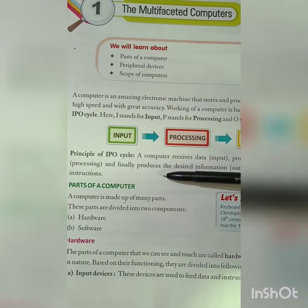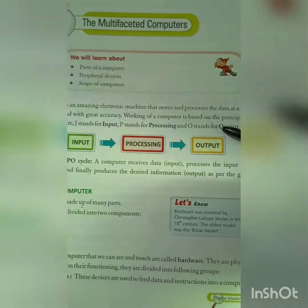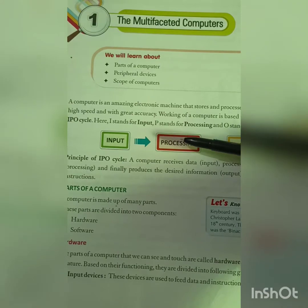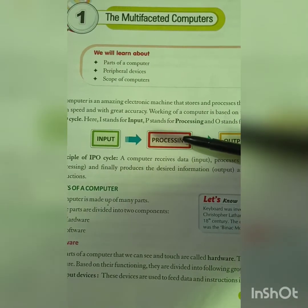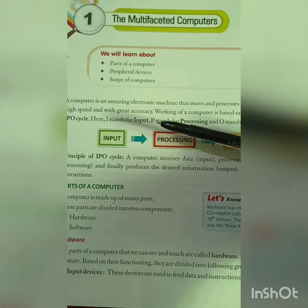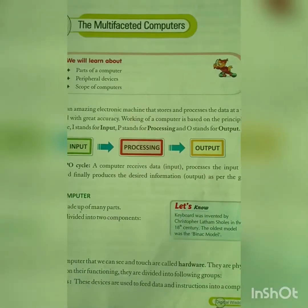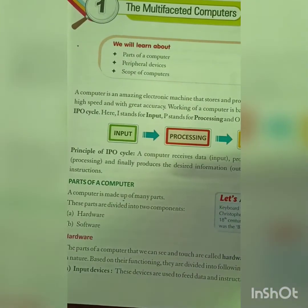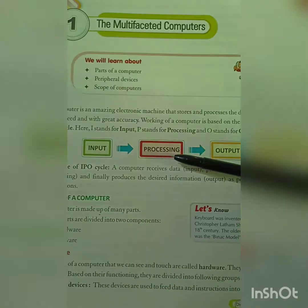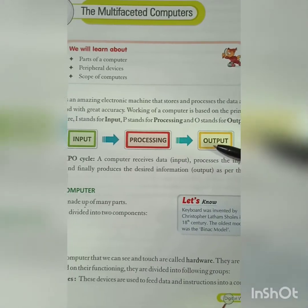A computer is an amazing electronic machine that stores and processes data at very high speed and with great accuracy. The working of a computer is based on the principle of the IPO cycle. IPO means input, processing, and output.